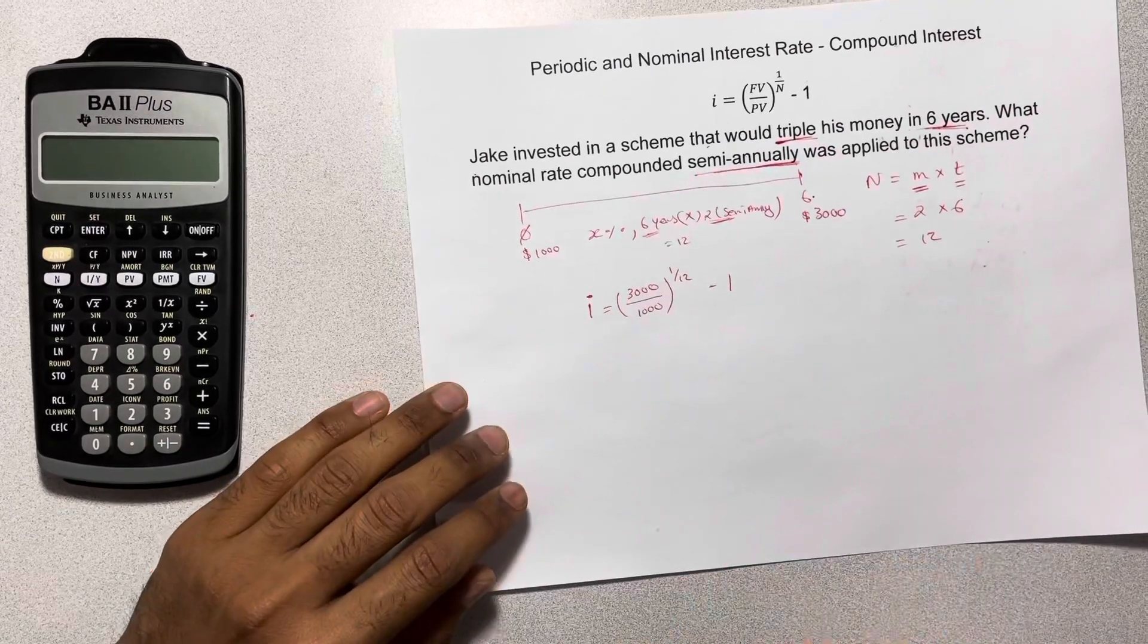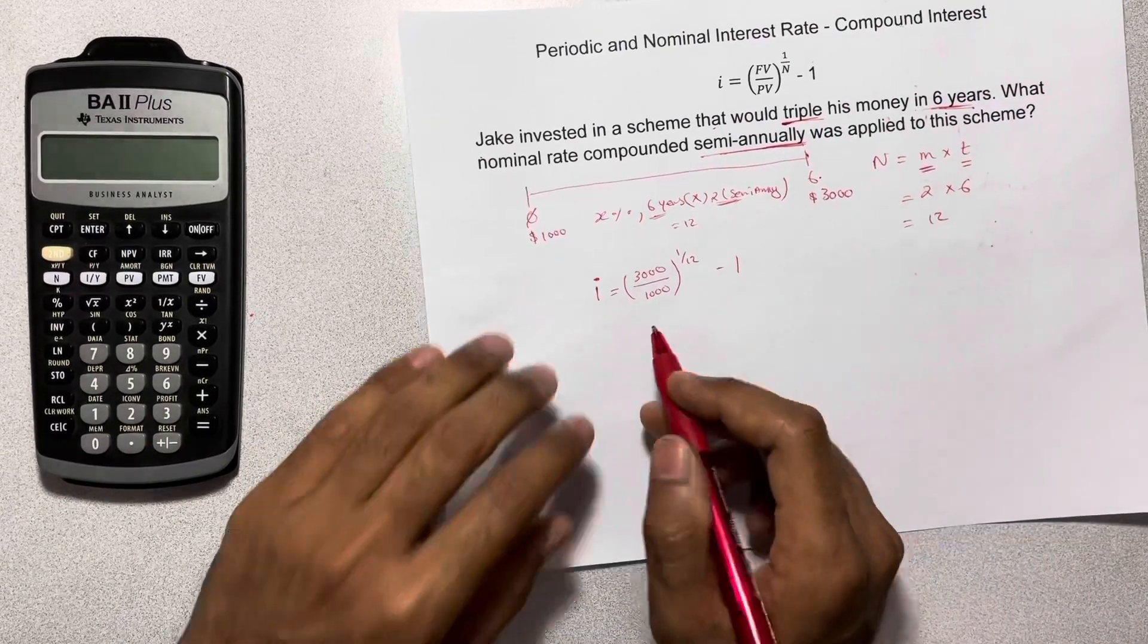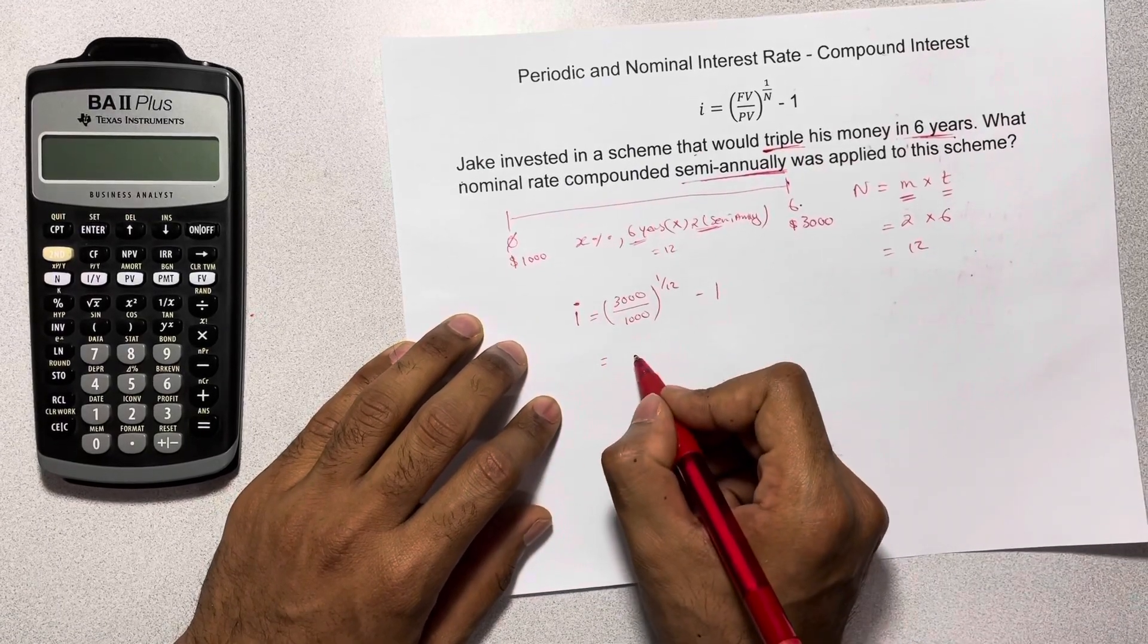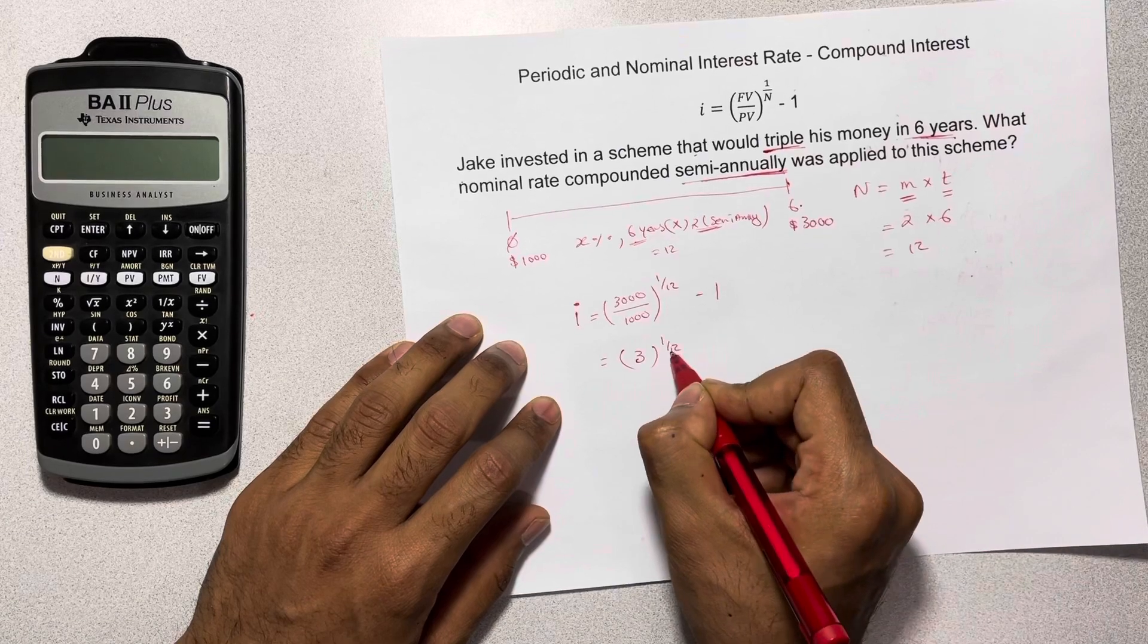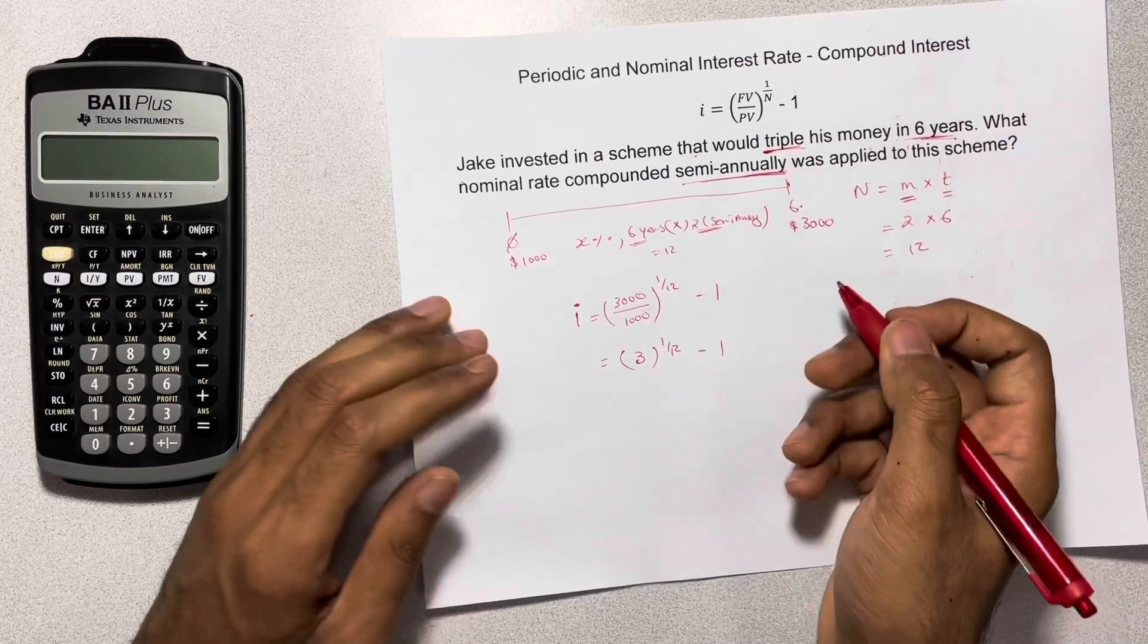So the first thing first, let's do what's in the brackets. So 3,000 divided by 1,000, so that's 3 to the power of 1 over 12 minus 1.